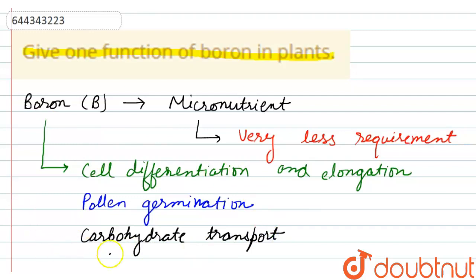So we can write any one function from these which will be our answer. We can write cell differentiation and elongation, we can write pollen germination, and we can also write carbohydrate transport. But the main function of boron is pollen germination, as it helps in the pollen germination.